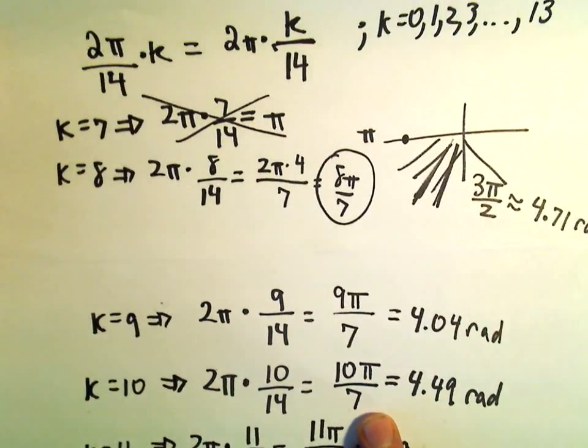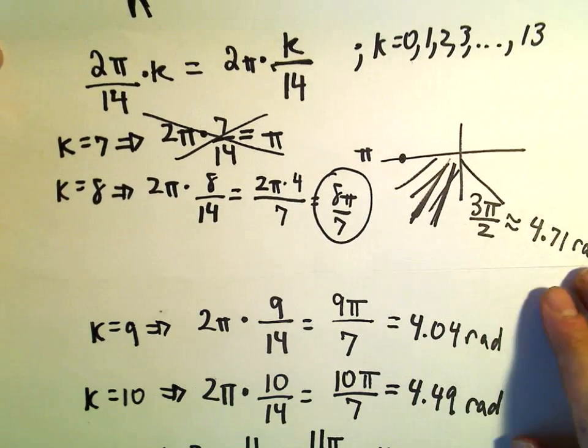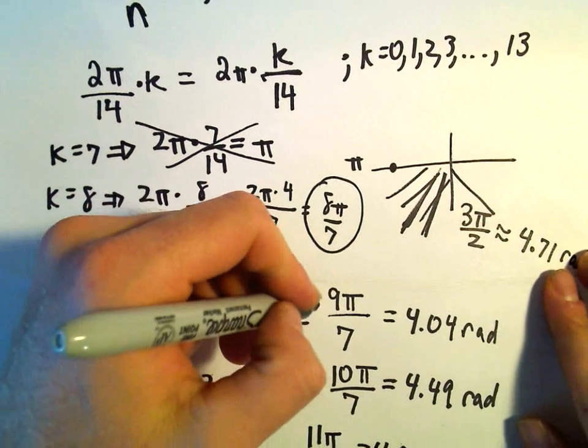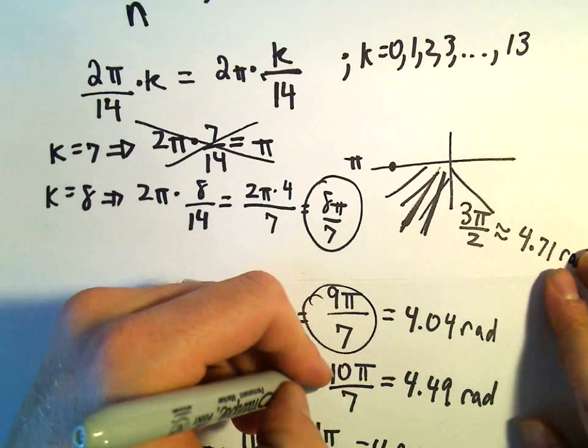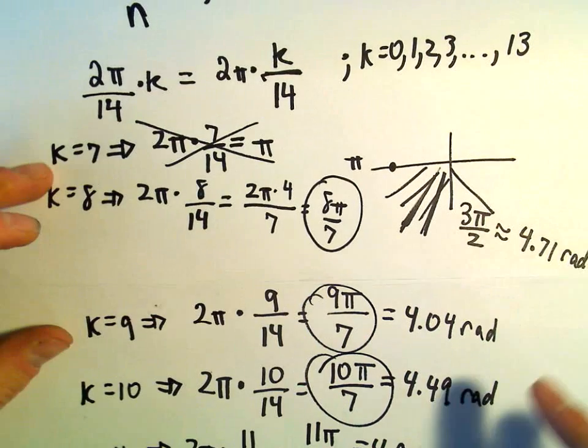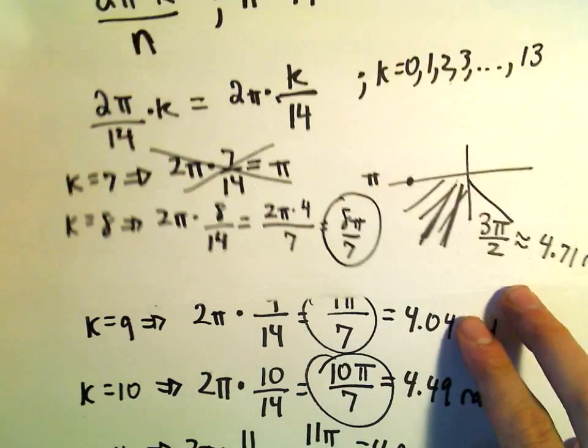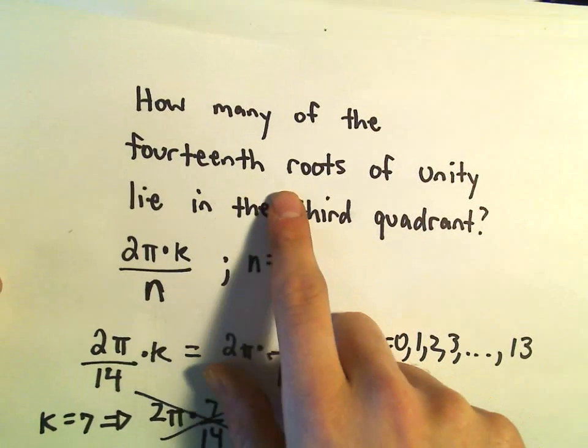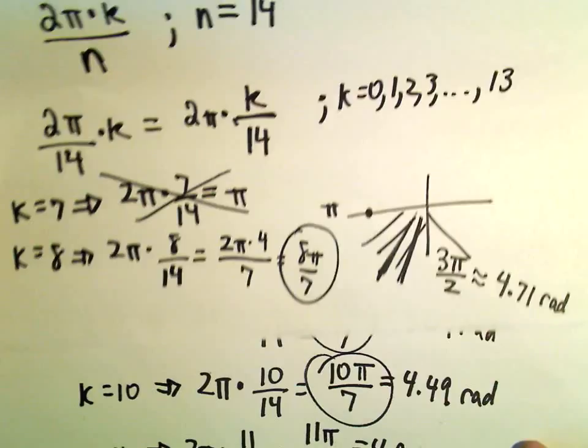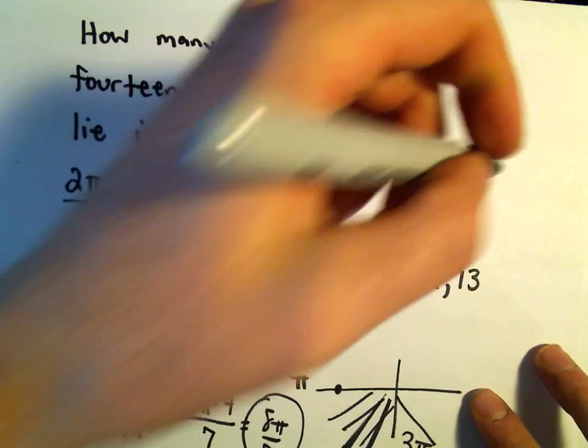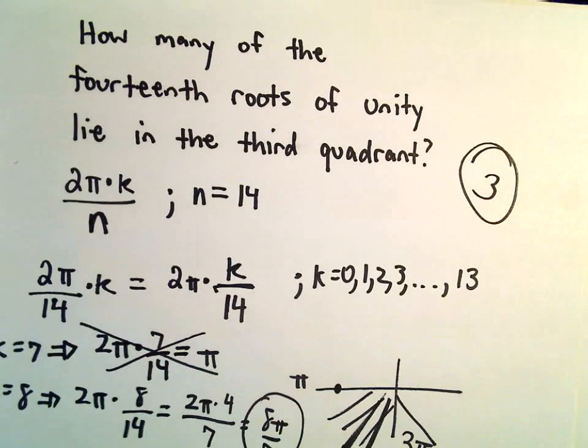I would say it looks like the ones that are going to be in quadrant 3 will be k equals 8, k equals 9, k equals 10. And so I think the ultimate question was how many of the 14th roots lie in the third quadrant. Well, to me, I would say 3 of them lie in the third quadrant. All right.